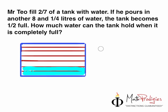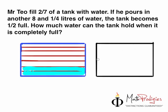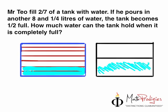So 2 over 7 is filled with water. If he pours in another 8 and 1/4 liters of water, the tank becomes how much full? Half full. So how do we do this? Let's imagine now that the tank is half full. So instead of 7 parts, it becomes, it looks a bit like this. So instead of divided by 7 parts, you actually have 2 parts, correct? So 1 part here and 1 part here. This is half, for example. So now the water level becomes this much. So how much is 8 and 1/4 liters of water?